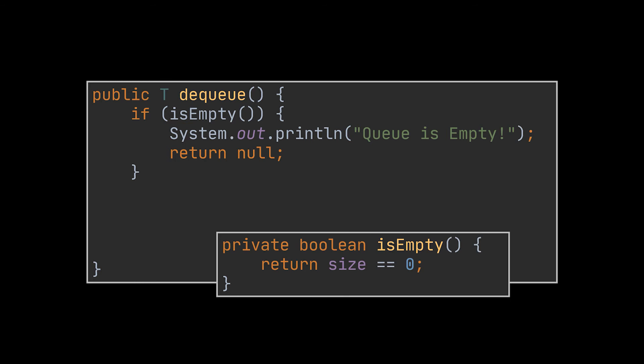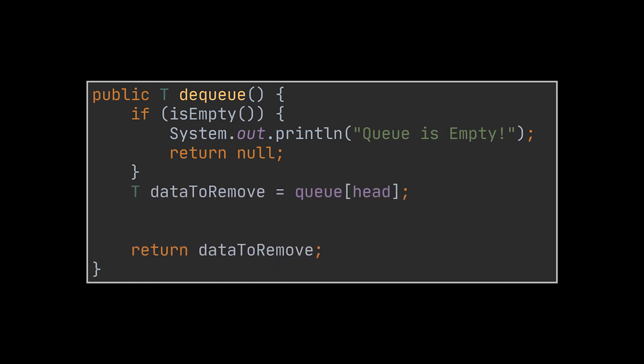To check if the queue is empty, we check if the size equals zero. Since dequeue returns the removed data, we store the head element in a variable first. Then we increment the head — just as we incremented the tail during enqueue — using the modulo operator to maintain the circular queue and avoid exceptions. Finally, we decrement the size, since we just removed an element.